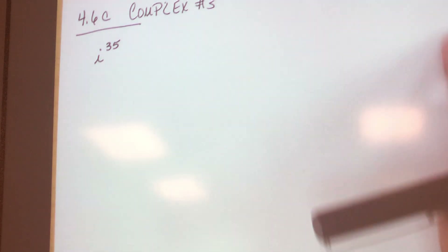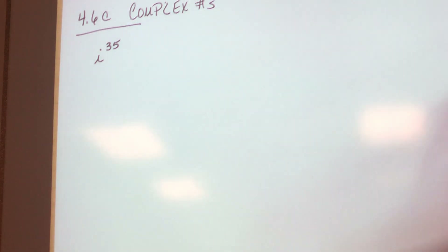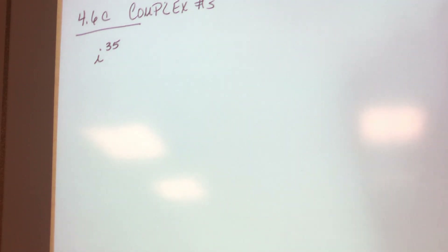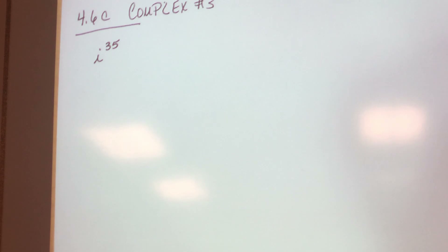Alright, tell me what you're supposed to know — tell me all the four. Very good. So this is i to the 1st, which is the square root of negative 1. This is i to the 2nd, i to the 3rd, and i to the 4th. And then it starts repeating itself, okay?